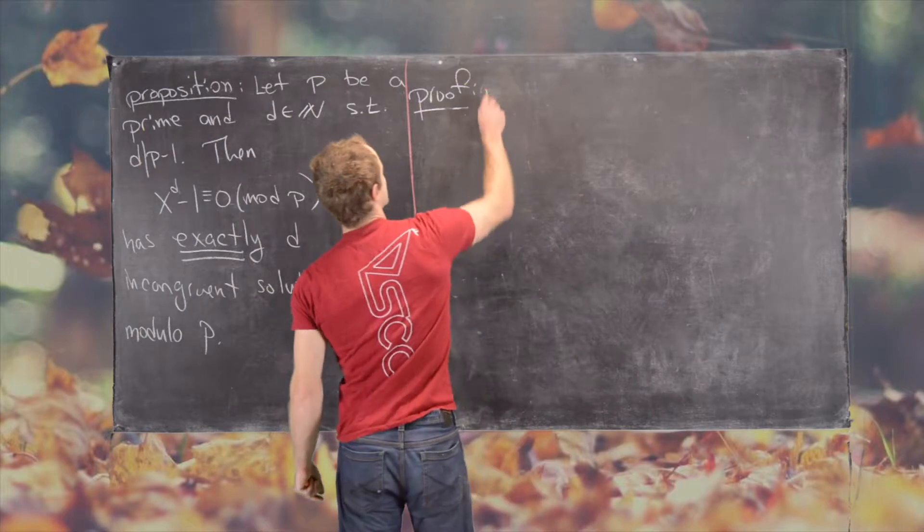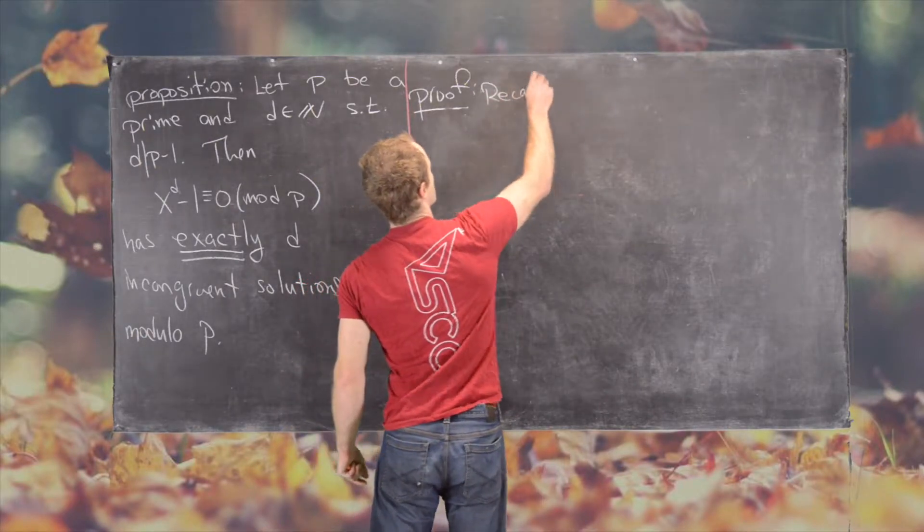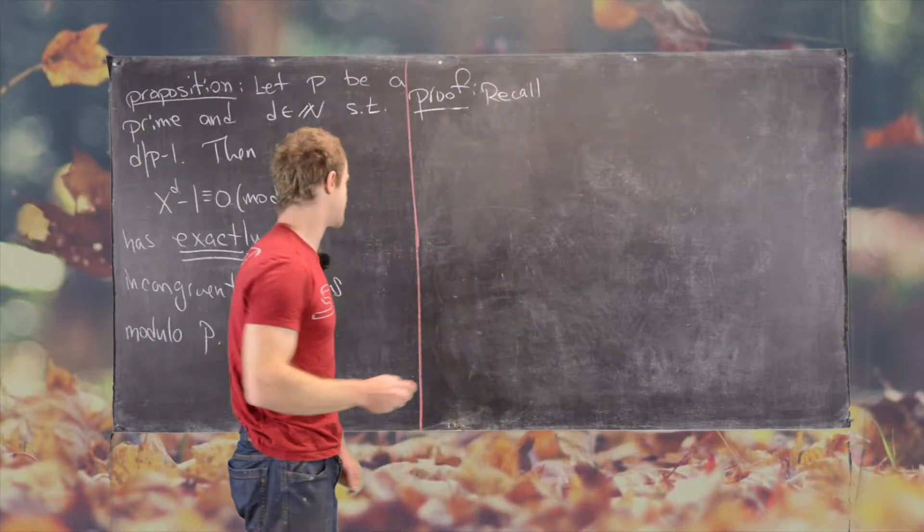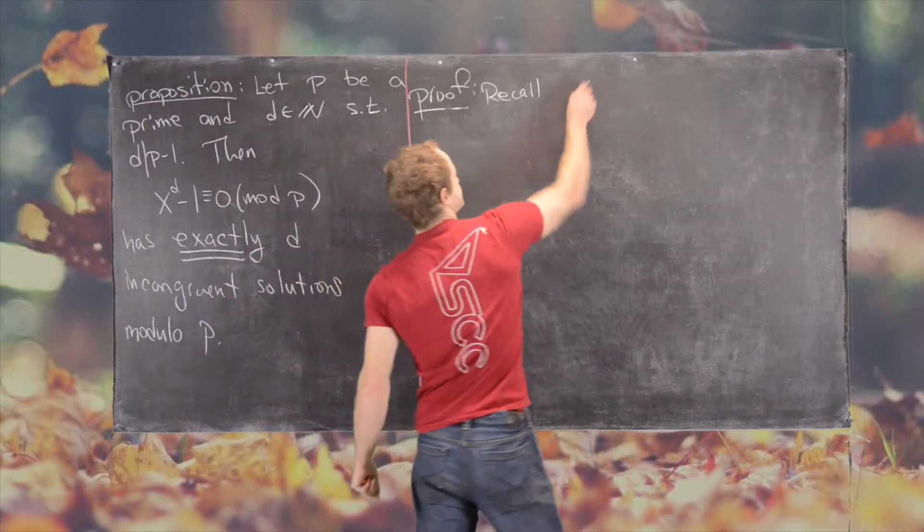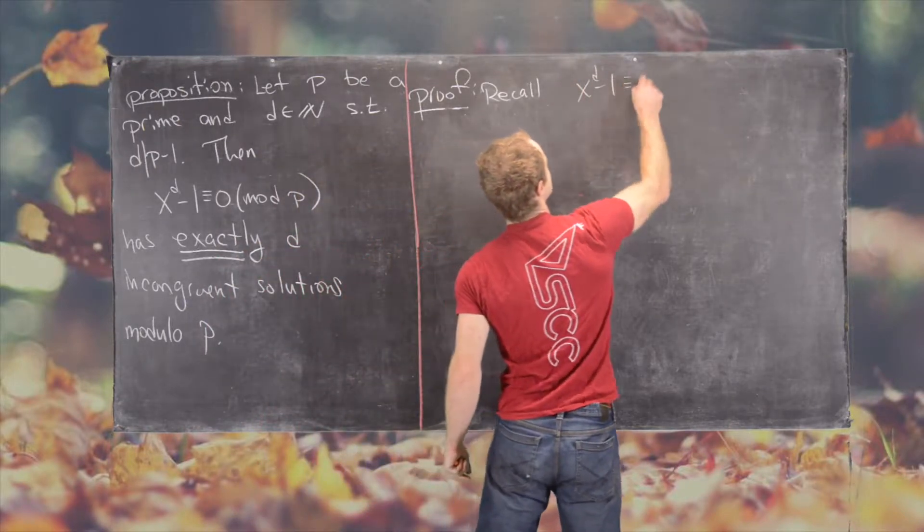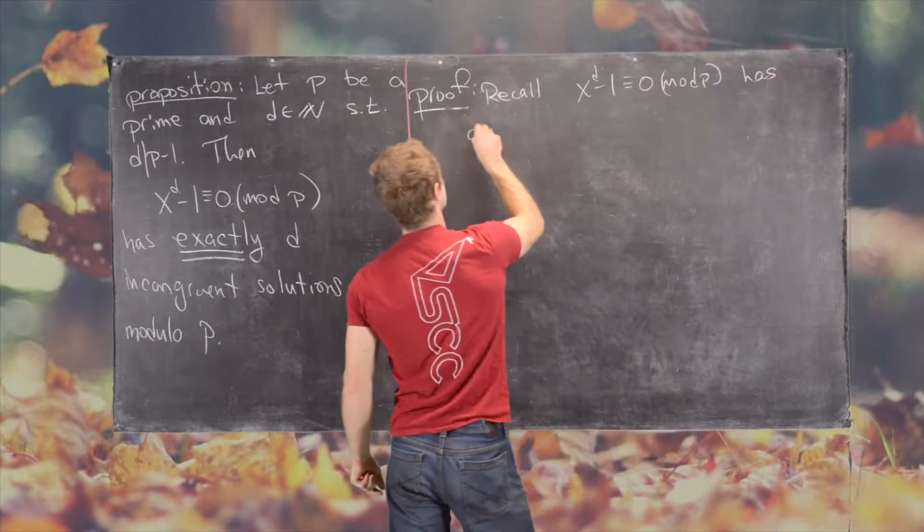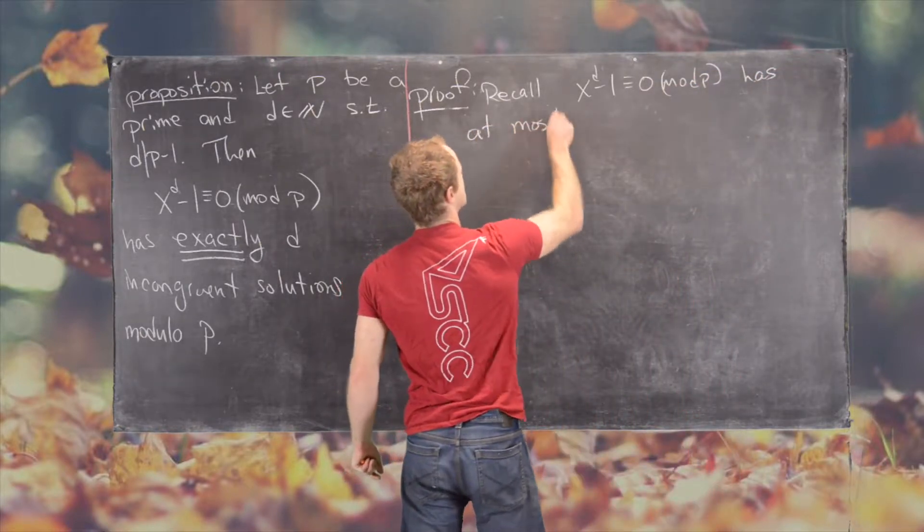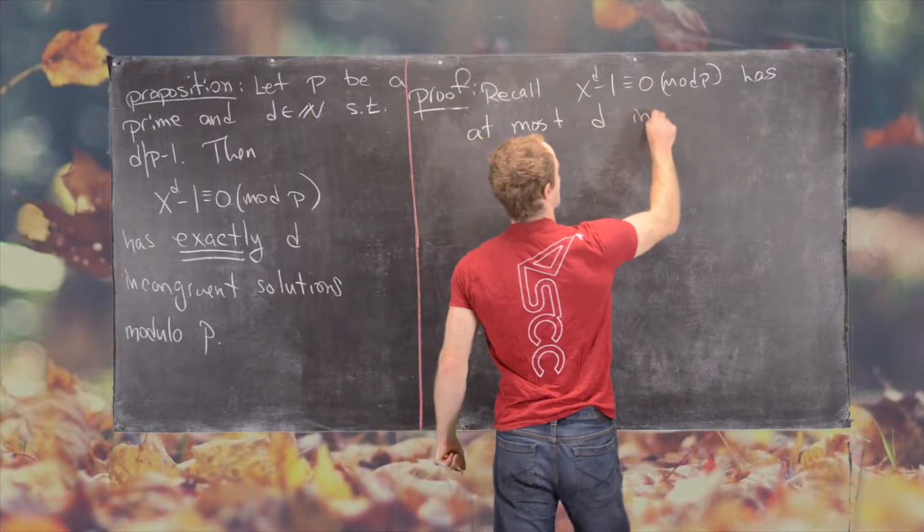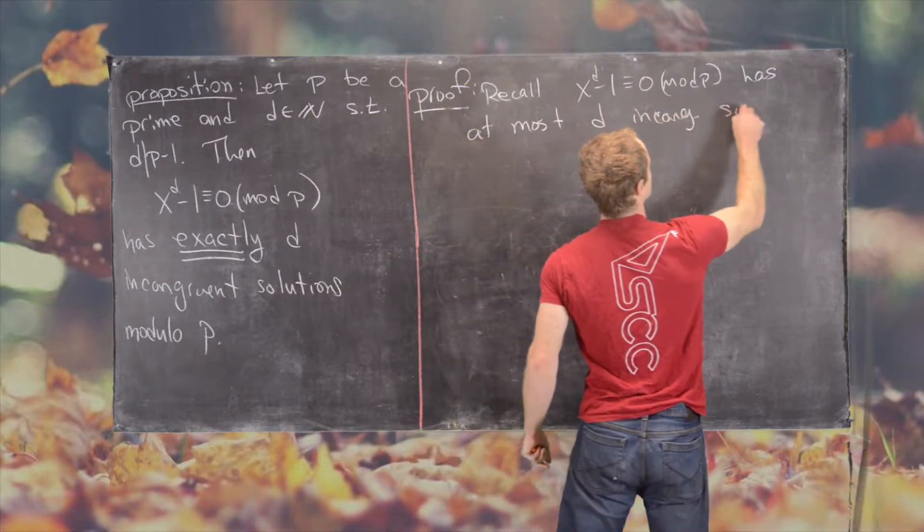So let's get going with the proof. If we recall from a previous result which we proved on this channel, we know that x to the d minus 1 is congruent to 0 mod p has at most d incongruent solutions.